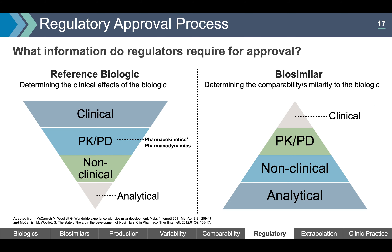Looking at the regulatory approval process: both reference biologics and biosimilars need clinical data, pharmacokinetic and pharmacodynamic data, non-clinical data, and analytical data. These data pyramids represent the evidence generated for product approval. While visually the same size for readability, the amount of data a biosimilar manufacturer submits is overall less than for the reference biologic — primarily due to a reduction in clinical data. This reduction is why biosimilars can be less expensive, requiring fewer resources for approval.